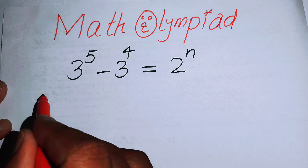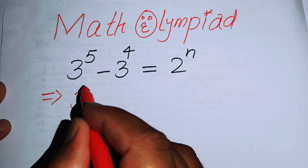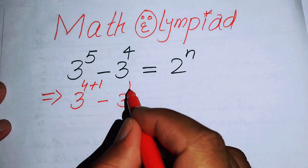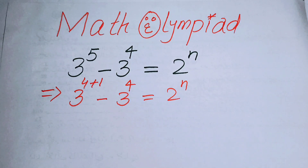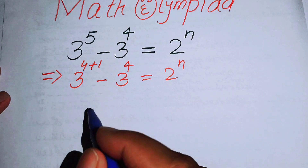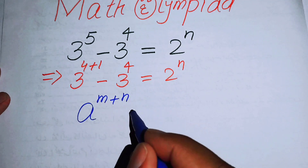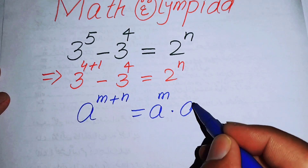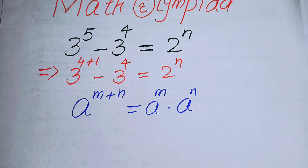The very first thing we are going to do is rewrite 3 to the power of 5 as 3 to the power of 4 plus 1, minus 3 to the power of 4, equals 2 to the power of n. Now we can use the exponential law: a to the power of m plus n equals a to the power of m times a to the power of n.